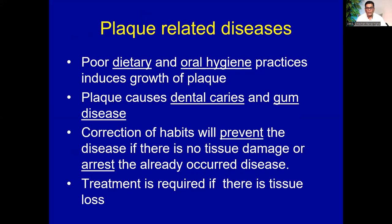Poor dietary and oral hygiene practices induce growth of plaque. Plaque causes two main diseases as mentioned — dental caries and gum disease, which is periodontal disease. Correction of habits will definitely prevent these diseases, and no further tissue damage will take place. If there is any tissue damage, that process will arrest if you maintain proper oral hygiene and remove the dental plaque properly. If there is tissue loss due to this plaque, treatment is required.